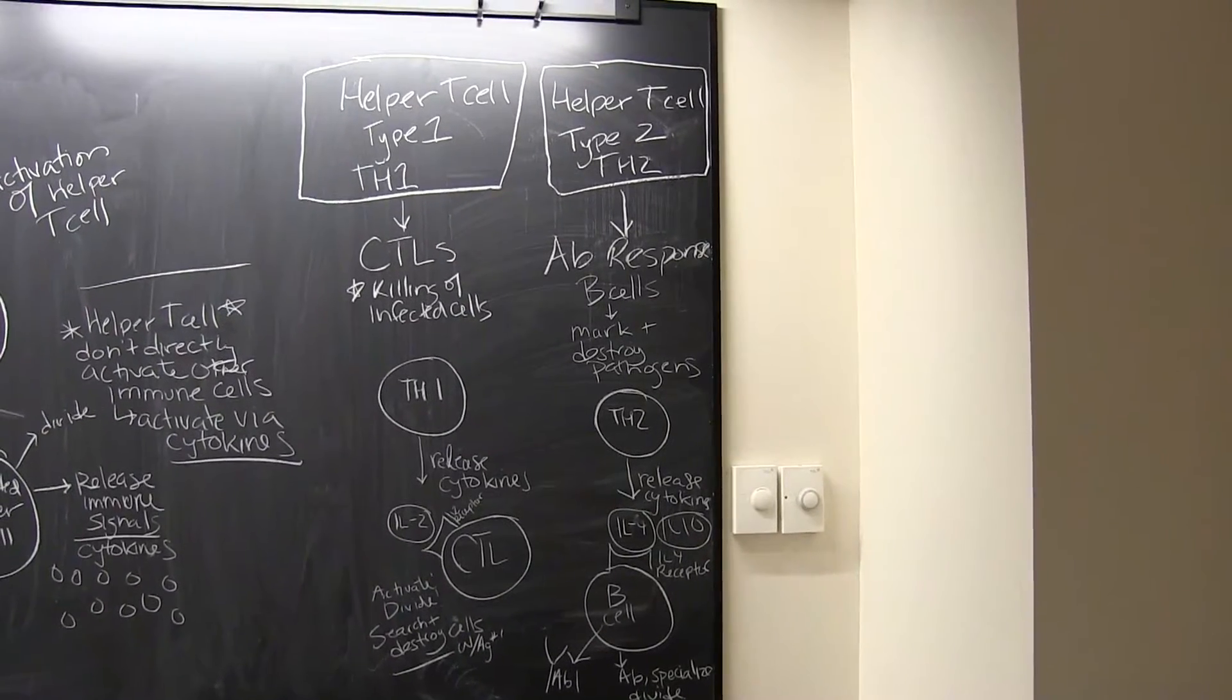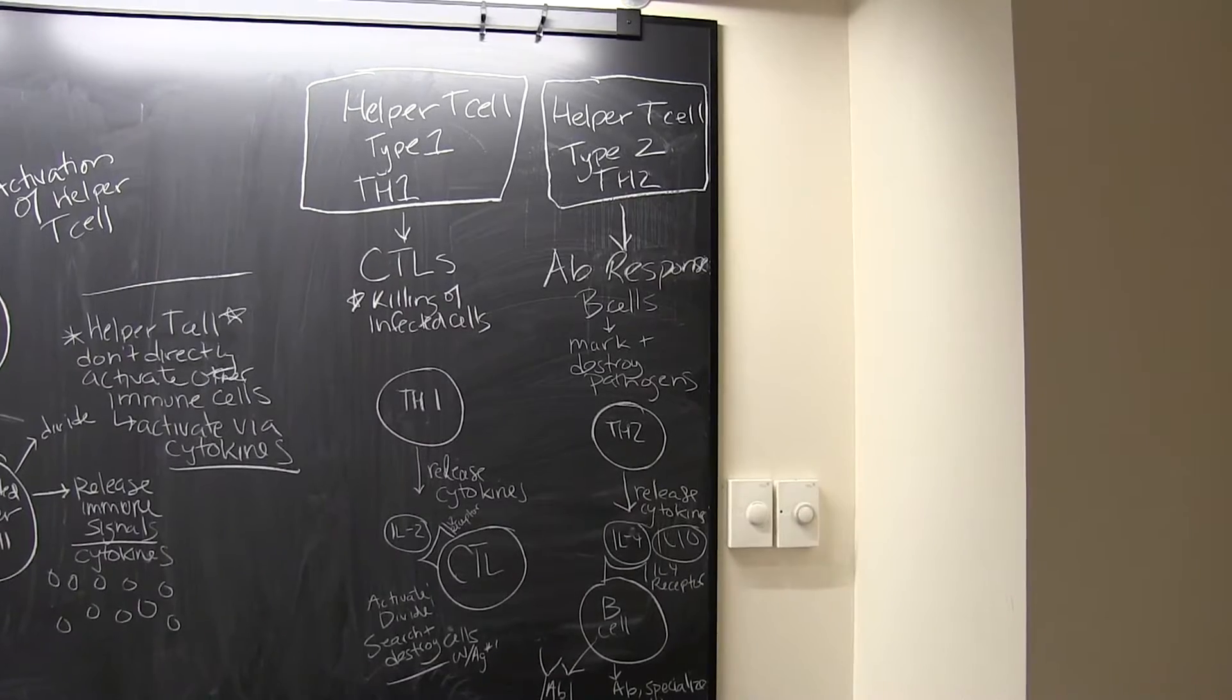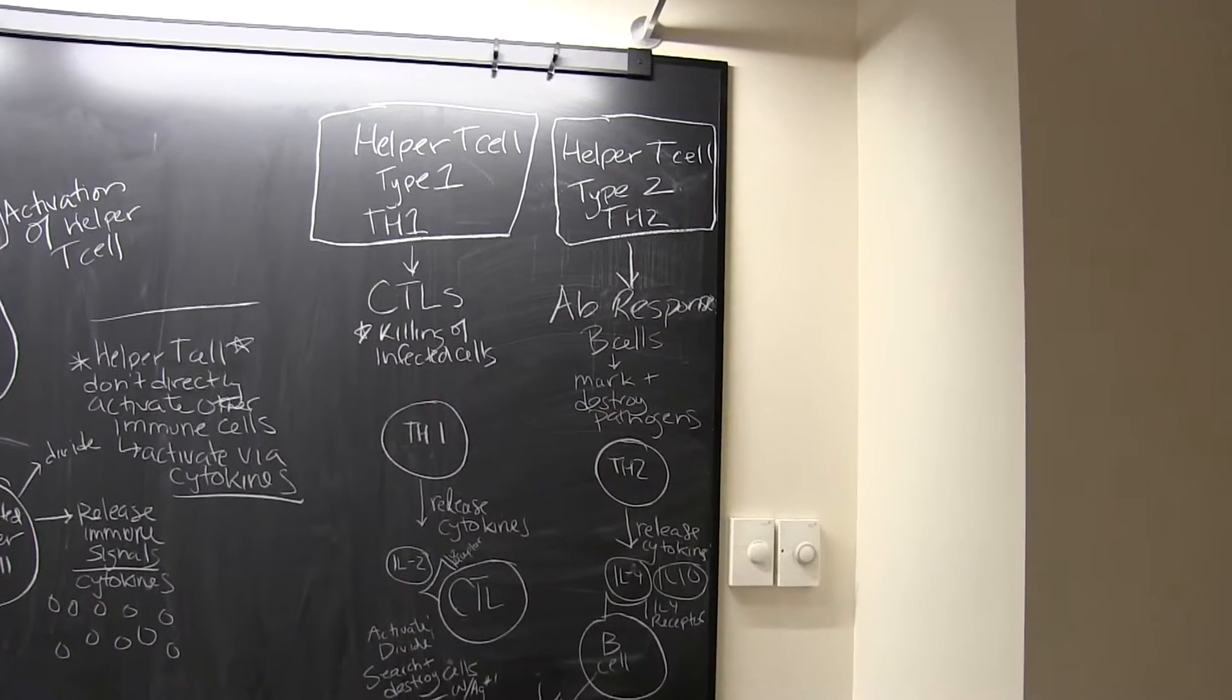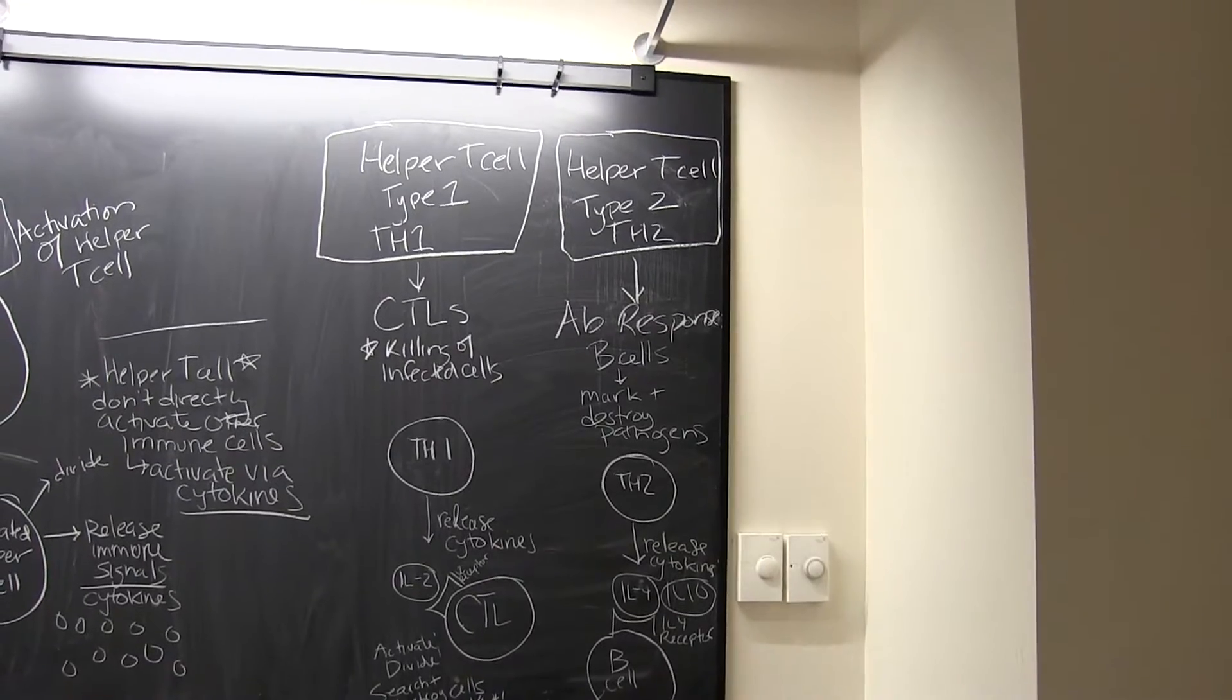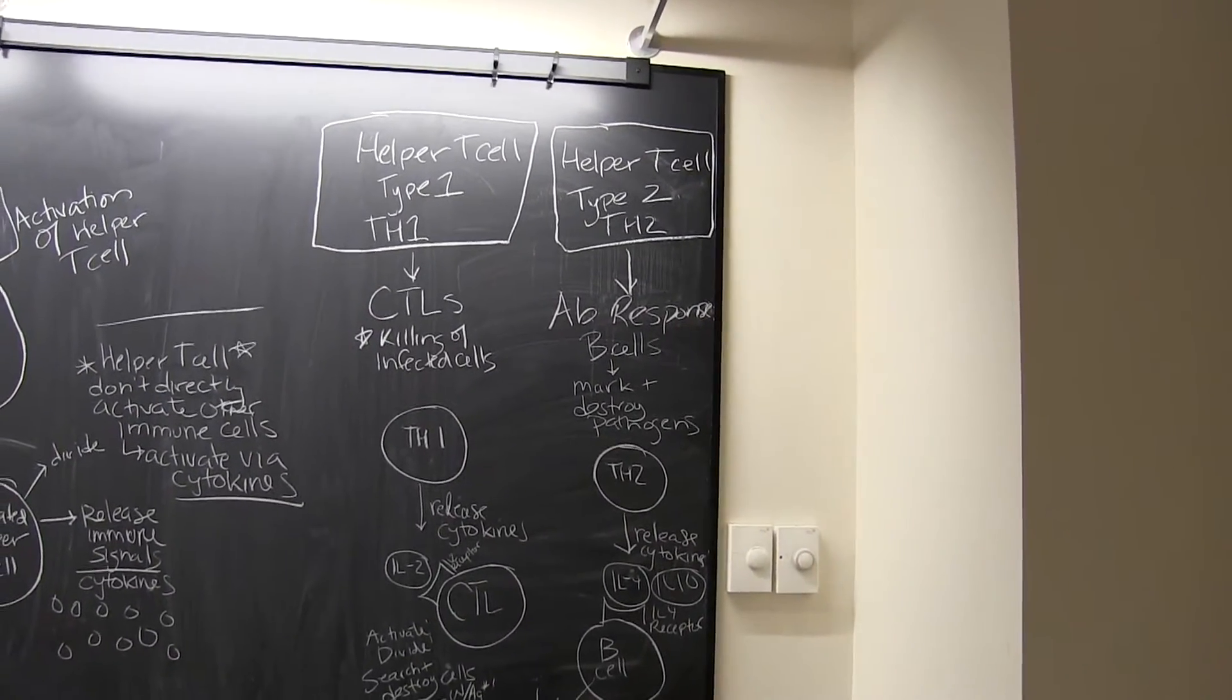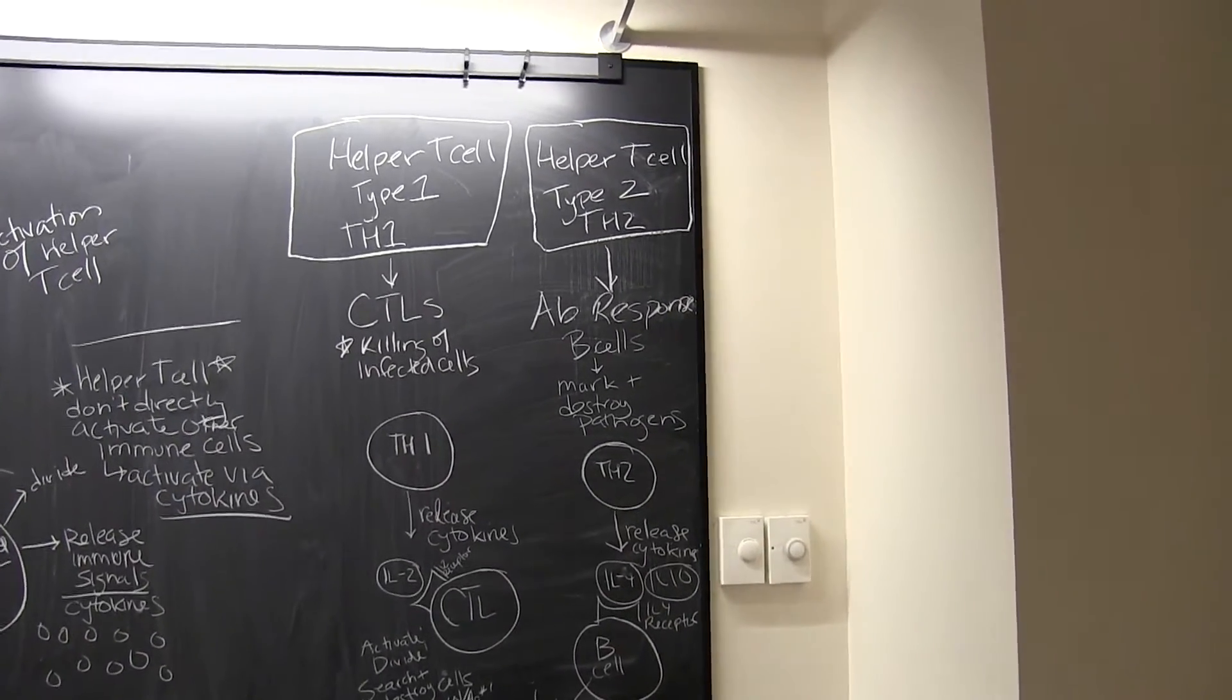Okay team, now we're going to learn about the different types of helper T-cells and how they lead to different immune responses. There are actually nine or ten different types of helper T-cells, and they all elicit different kinds of immune responses. But for the purposes of this class, we're only going to focus on two types of helper T-cells.